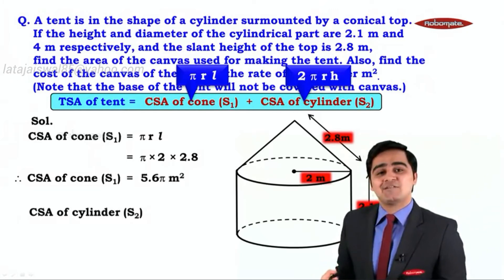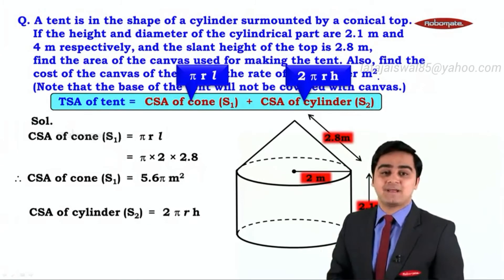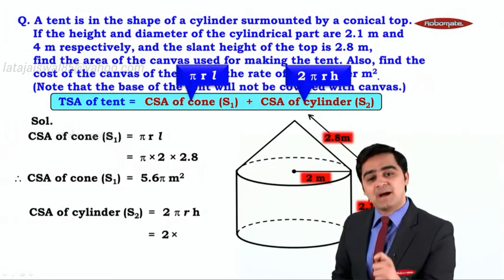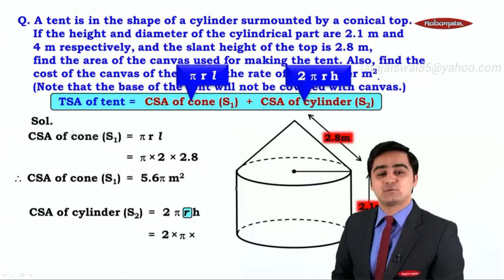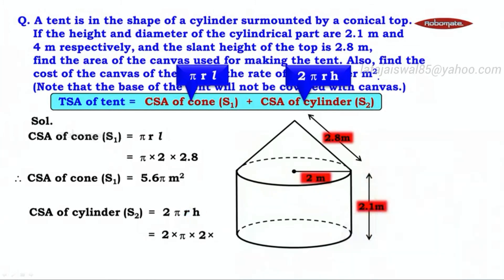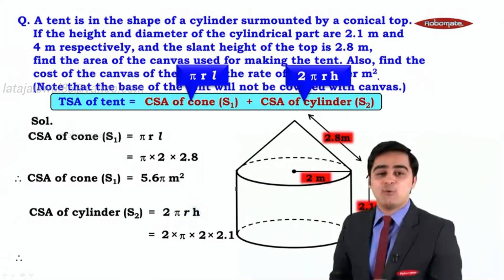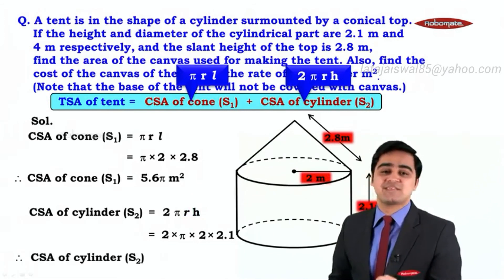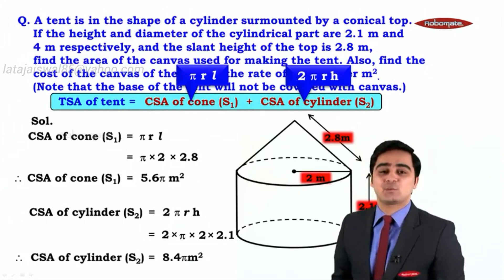Now let us calculate the curved surface area of the cylinder. The formula is 2πrh. Substituting the values: 2 × π × 2 × 2.1. Two into 2 is 4, and 4 into 2.1 is 8.4. So we have the curved surface area of the cylinder, S2, equal to 8.4π meter square.